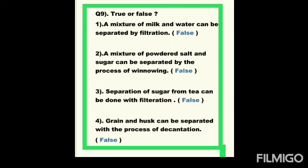(3) Separation of sugar from tea can be done with filtration — FALSE. Both sugar and tea are solid components dissolved in liquid; filtration requires one liquid and one solid component. (4) Grain and husk can be separated with the process of decantation — FALSE, because both grain and husk are solid components with no liquid component present, so decantation cannot be used.